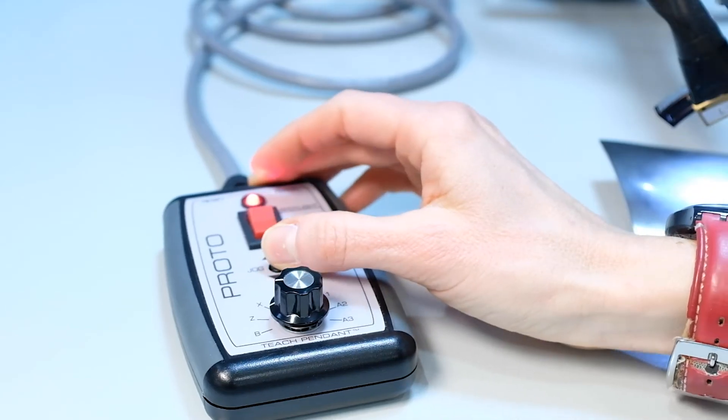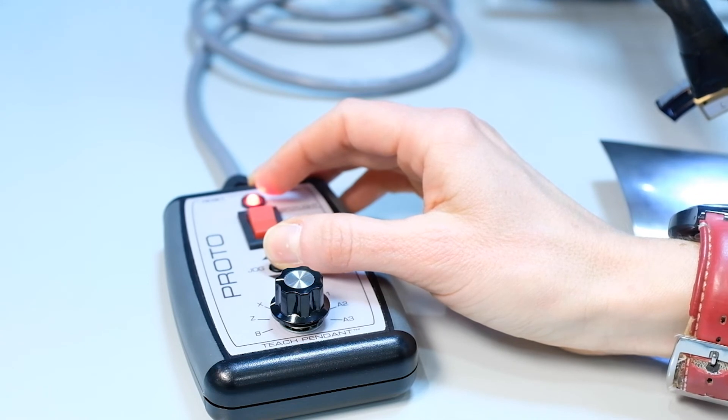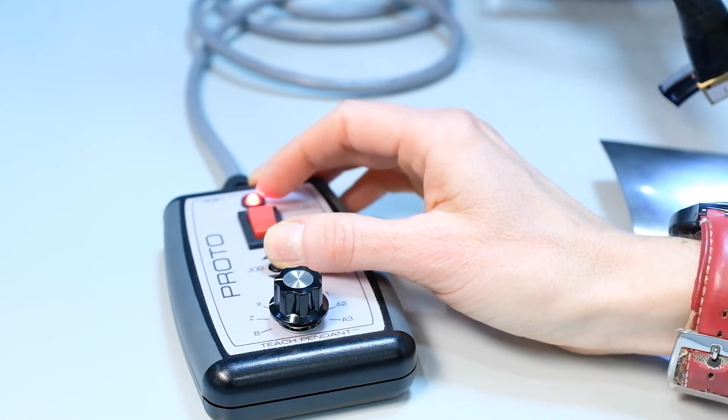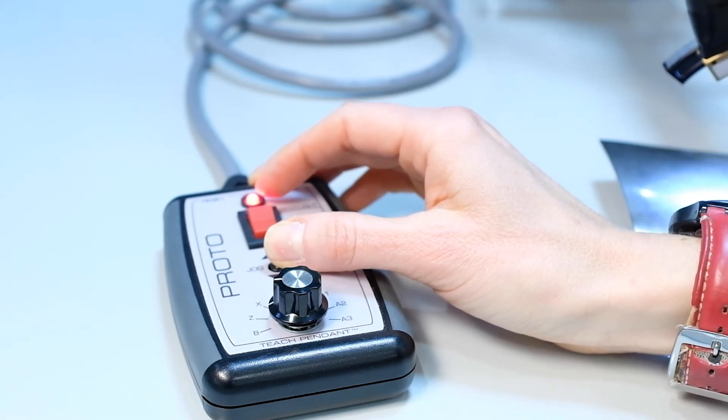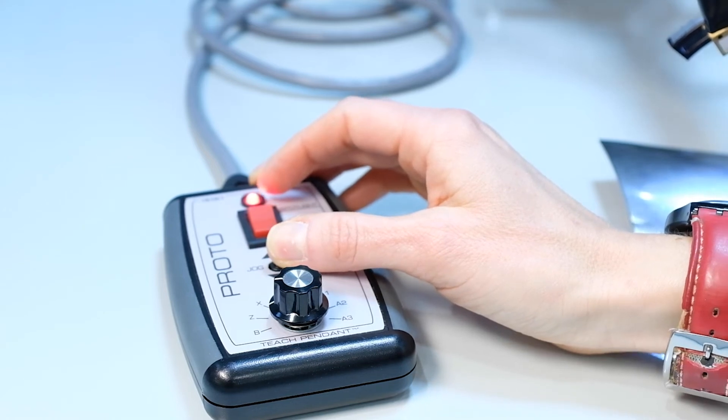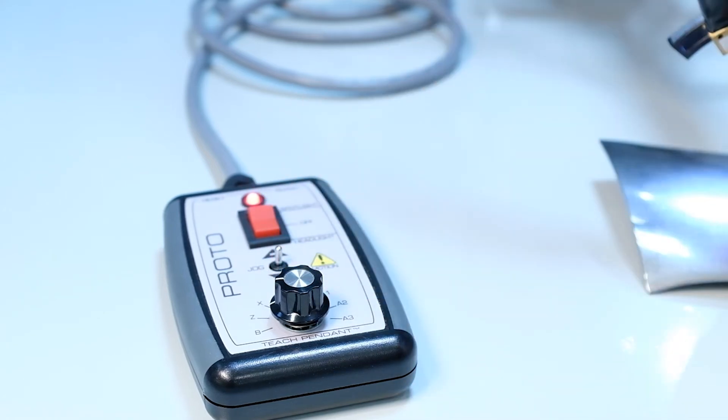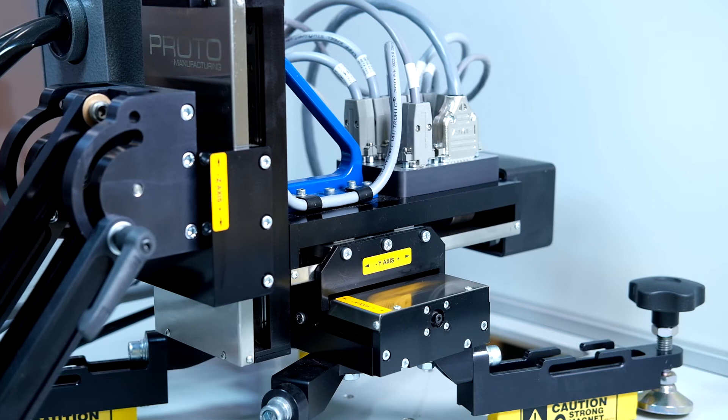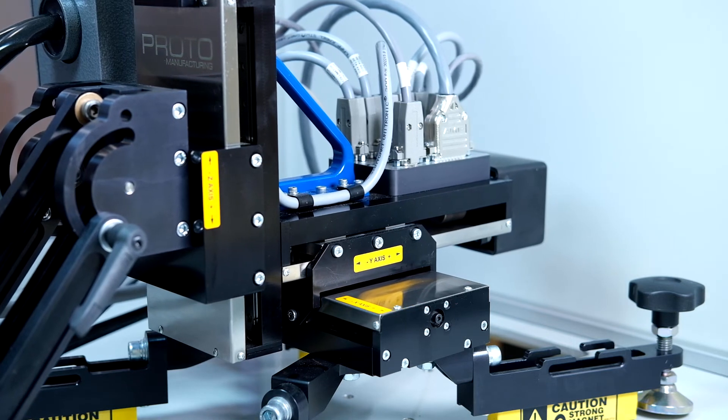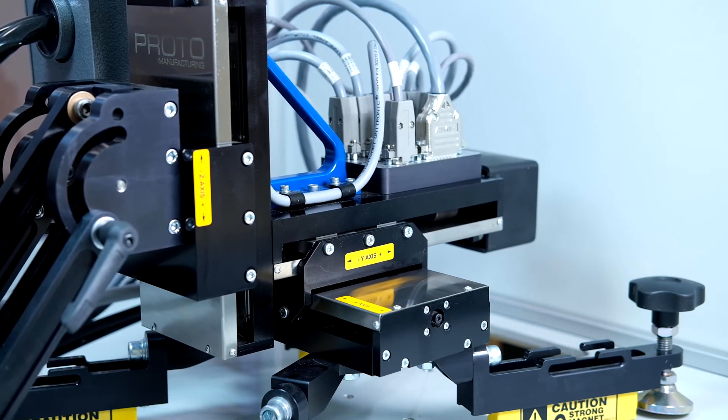The iXRD comes with portable residual stress mapping technologies. Both TEACH and square mapping are available. Using the handheld pendant, it is possible to select a series of measurement points for efficient measurements of multiple locations.